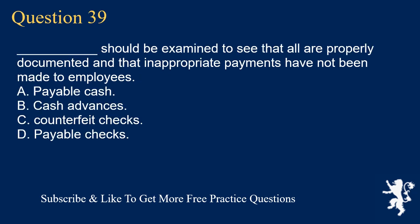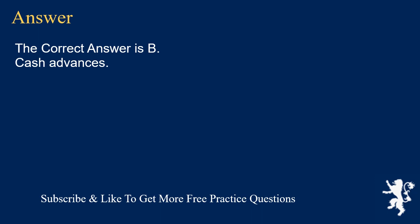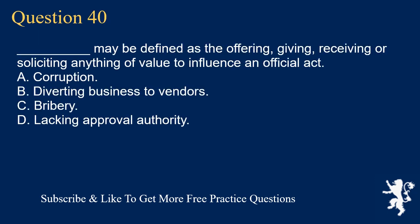Question 39: Underscore should be examined to see that all are properly documented and that inappropriate payments have not been made to employees. A. Payable cash. B. Cash advances. C. Counterfeit checks. D. Payable checks. The correct answer is B. Cash advances.